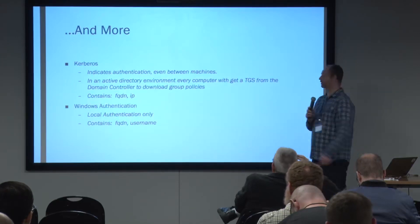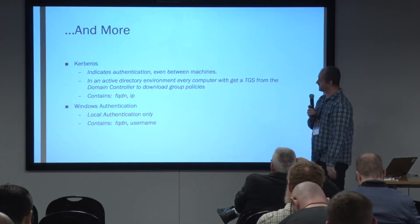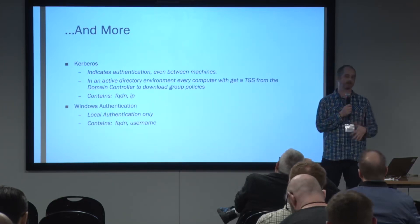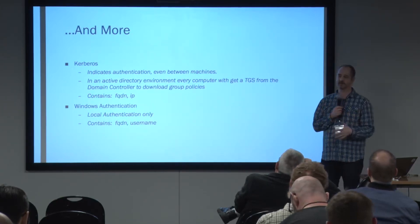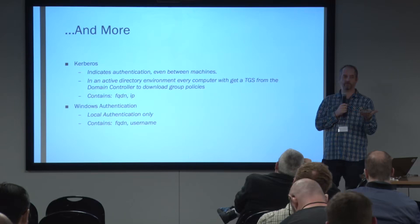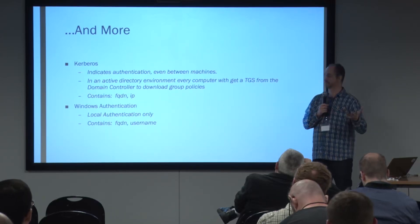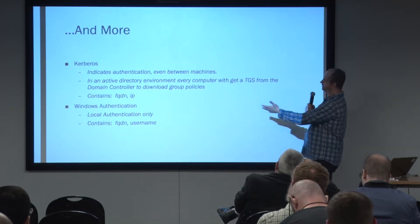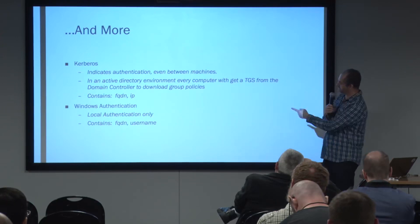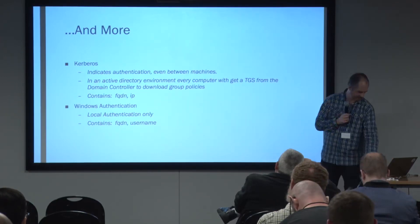But there's more. Kerberos indicates authentication between machines. In Active Directory, as soon as your computer identifies it's on Active Directory, it does a Kerberos lookup for group policy, which is TGS. TGS includes FQDN and IP. And then Windows Authentication — I'll skip that.